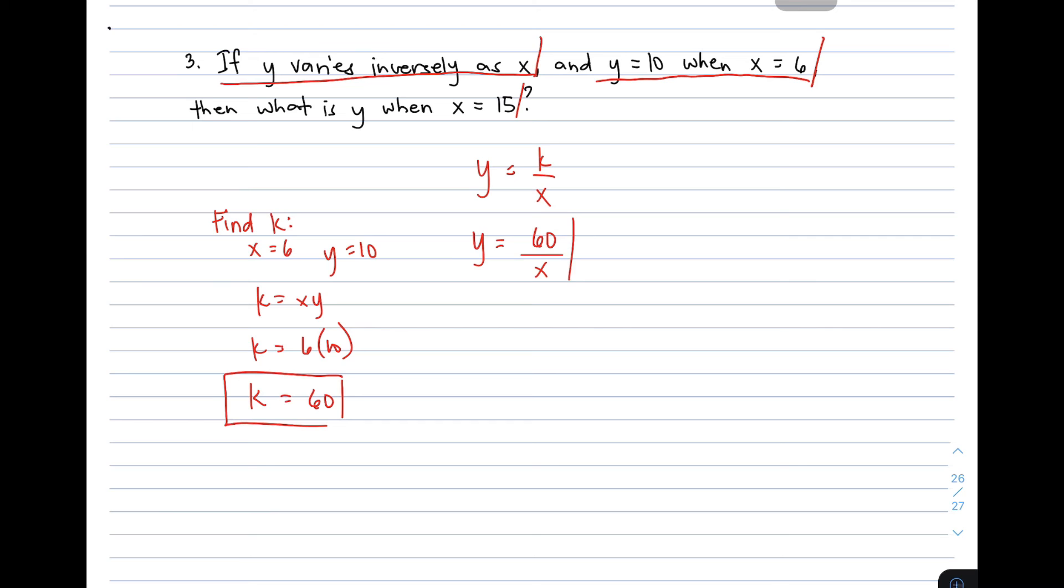This is the equation. Now for the main problem, what is y when x is equal to 15? Find y. So using this equation, y is equal to 60 over x, your x is equal to 15. Now y is equal to 60 over 15. And simplify, your y is equal to 4. This is the value of y.